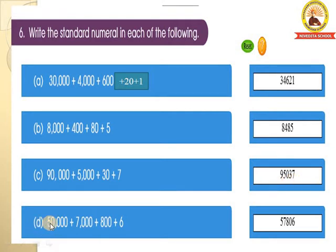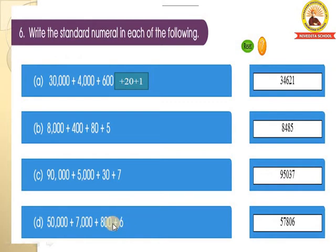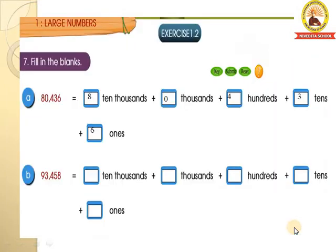Next, D: 50,000 plus 7,000 plus 800 — the 10th place is missing here. So what you have to write when there is a missing place? You have to write 0 there. Then plus 6 is there in the 1st place. So the 10th place is missing, write 0 there. The standard form is 57,806.